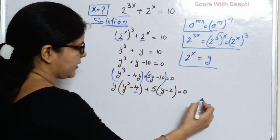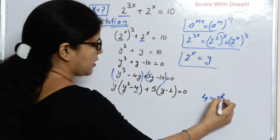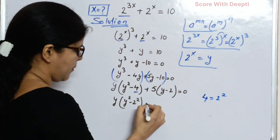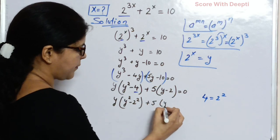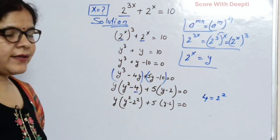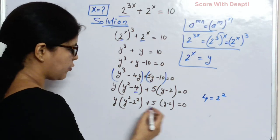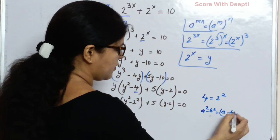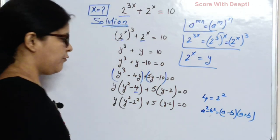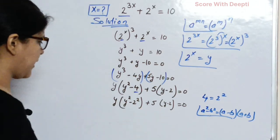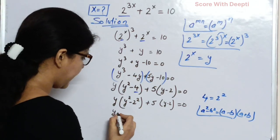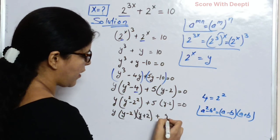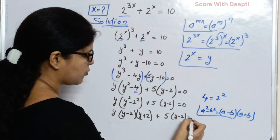Next, 4 can be written as 2 squared. So in place of 4, we write y squared minus 2 squared, plus 5 into y minus 2. Our next step, we apply the difference of squares rule: a squared minus b squared equals a minus b into a plus b. Applying this formula, we write y into y minus 2 into y plus 2, plus 5 into y minus 2, equal to 0.